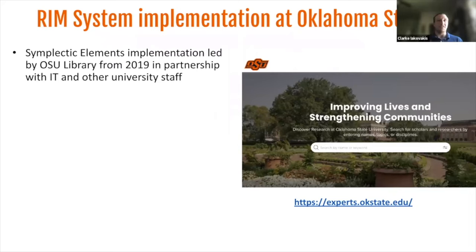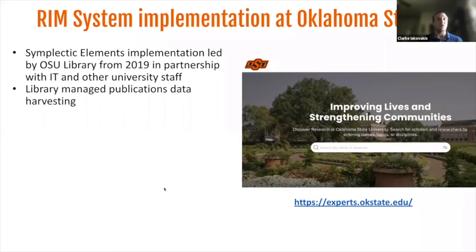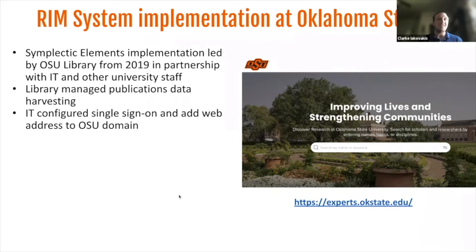At Oklahoma State University, we began implementation of our RIM system, which runs on Symplectic Elements, in late 2019. The project is supported by the Office of the Provost and the Vice President for Research, and implementation is led by the OSU Libraries in partnership with IT and other university staff. From the beginning, librarians have managed the publications harvesting, gathering Scopus author IDs, ORCIDs, and other publications data, which gave most faculty a solid baseline of publications linked to them from the outset. IT configured our single sign-on, which is CAS, and added the web addresses to the OSU domain.